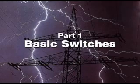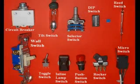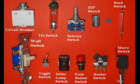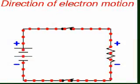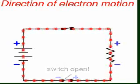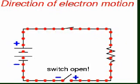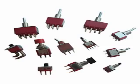Welcome back to the world of electricity. This presentation is about electrical switches. An electrical switch is any device used to interrupt the flow of electrons in a circuit. Switches are essentially binary devices — they are either completely on, closed, or completely off, open. There are many different types of switches and we will explore some of these types in this presentation.